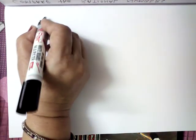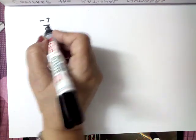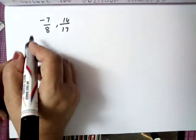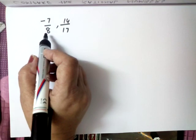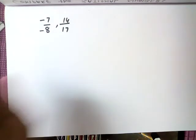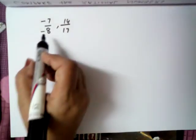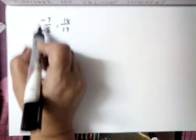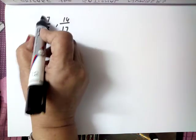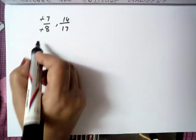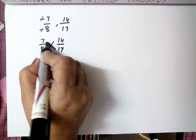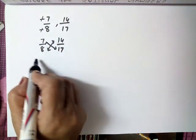Ek example hum aur karenge. One example is: minus 7 upon 8 and 14 upon 17. Isme teeno concepts karenge. First of all, denominator must be positive — denominator positive ho achha hai. Ab upar neeche dekho, yahan par cut kar dete hain. Yeh cut ho gaye dono. Then it will be 7 upon 8 aur 14 upon 7. Cross multiply karenge — sequence ko aap change bilkul nahi karenge.